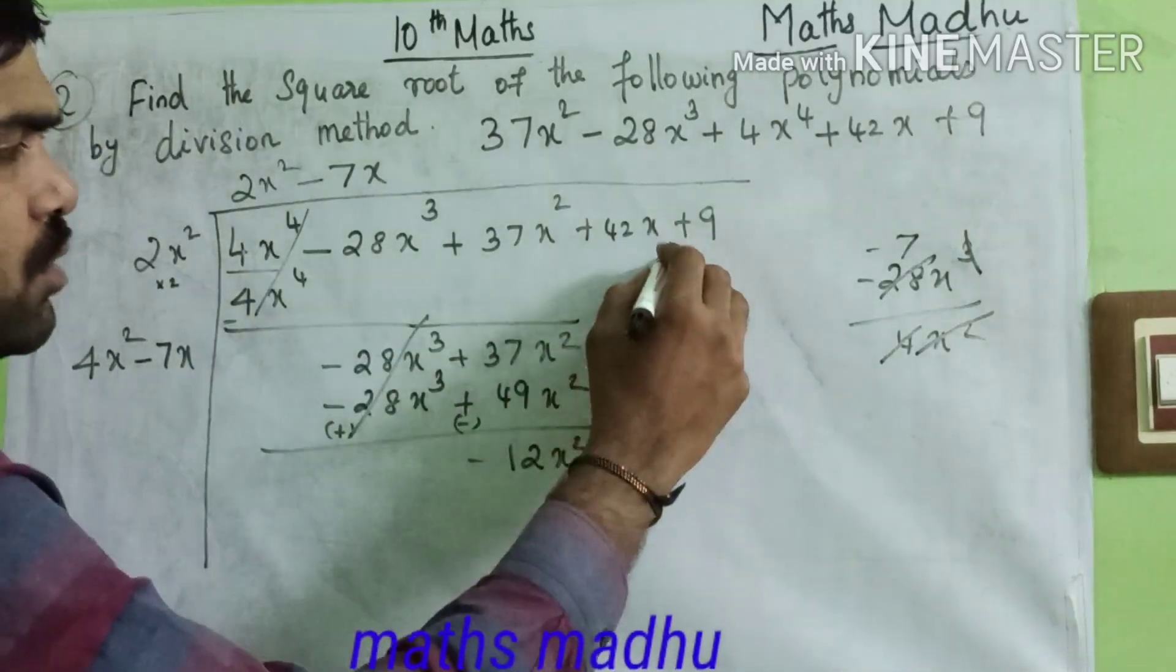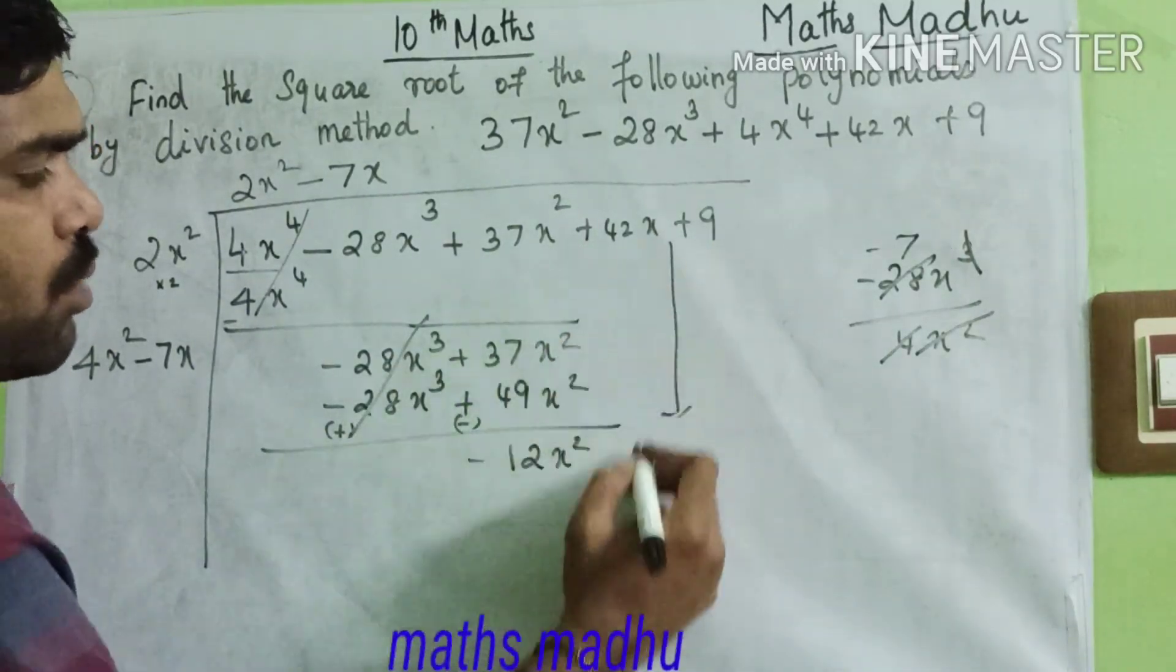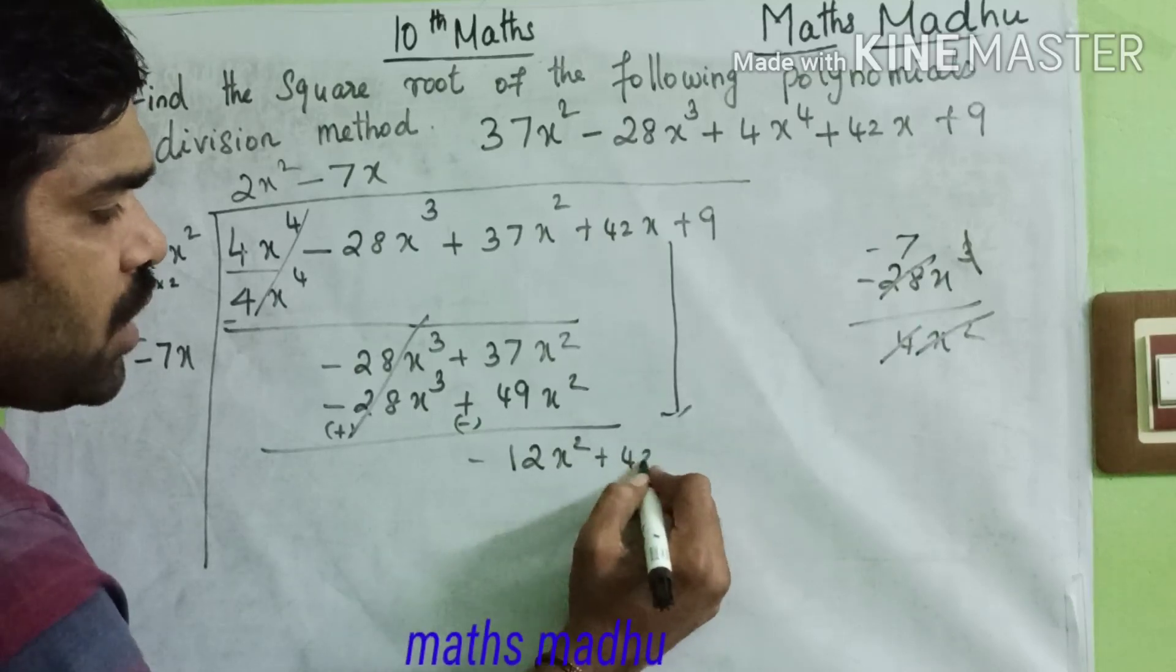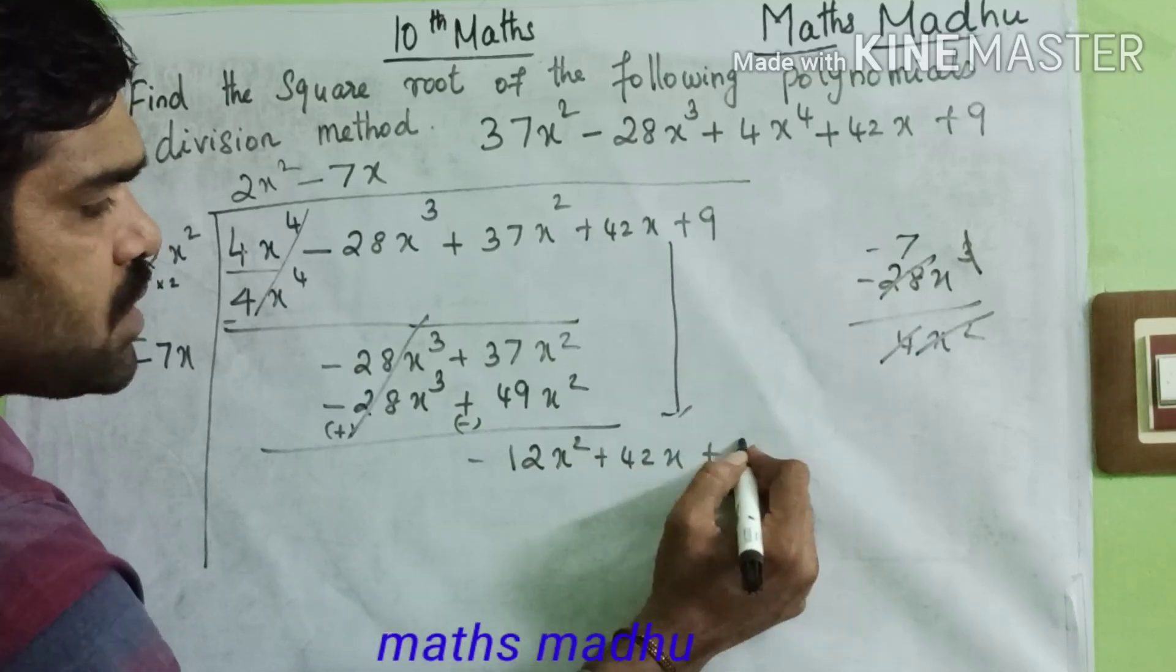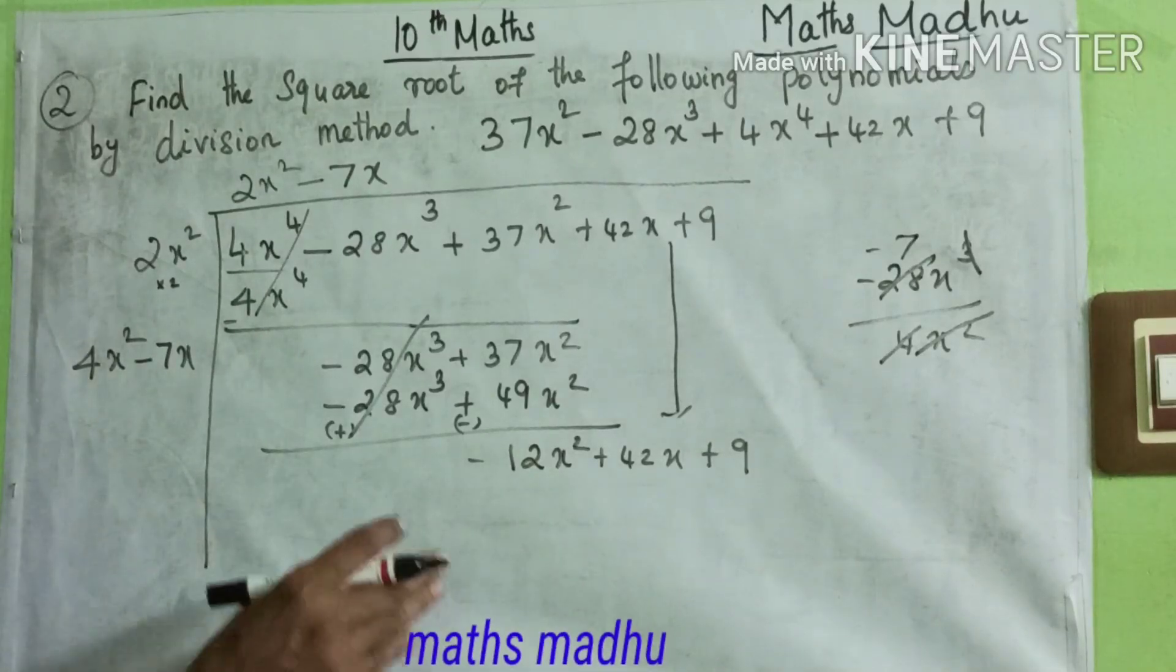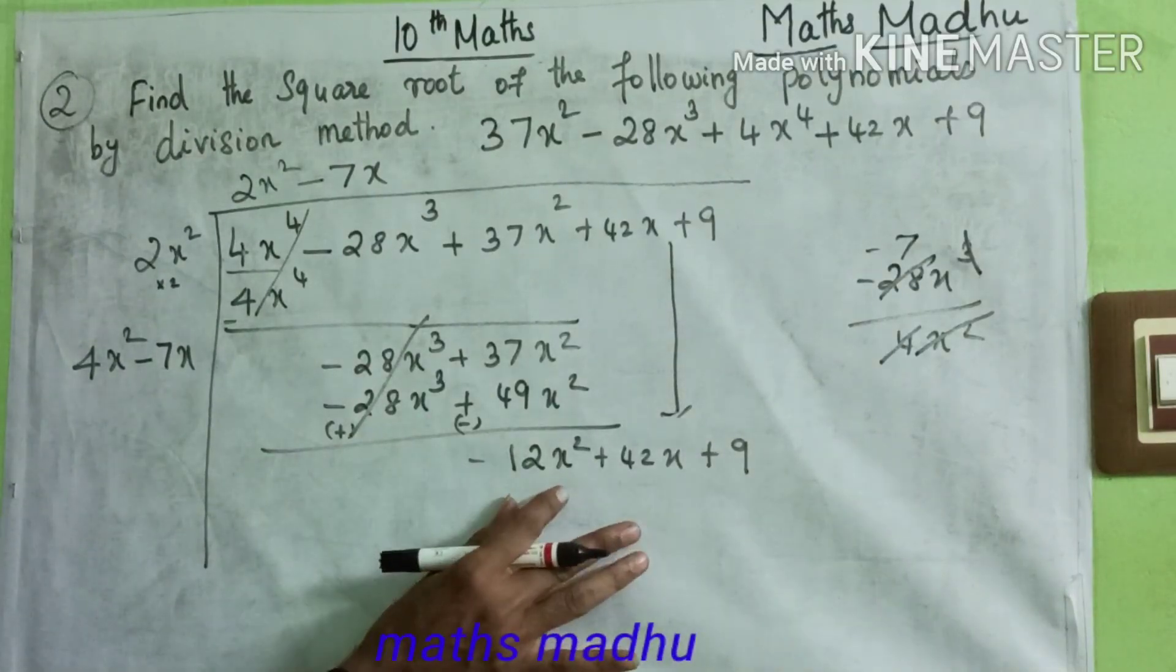So subtract from, wrong, a to lose. So minus 12x². So the next to the number of you have more, plus 42x plus 9.